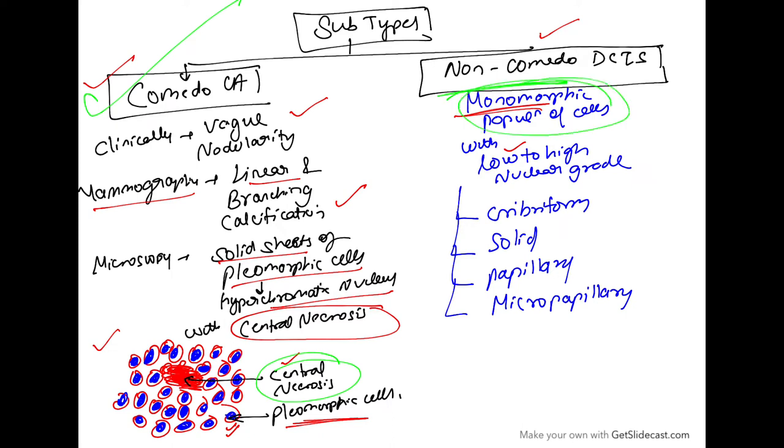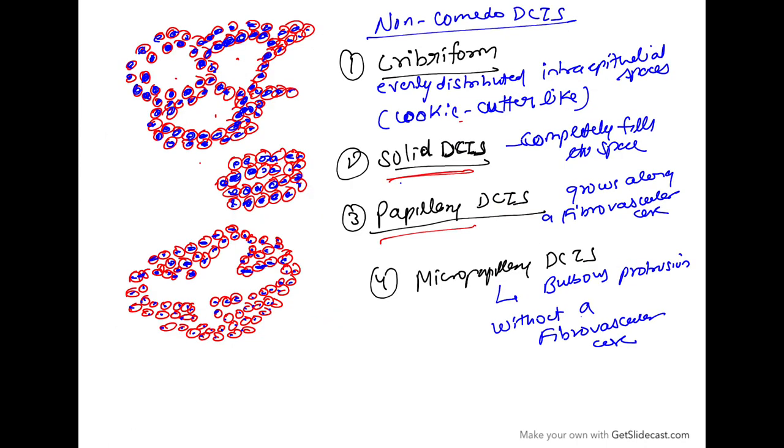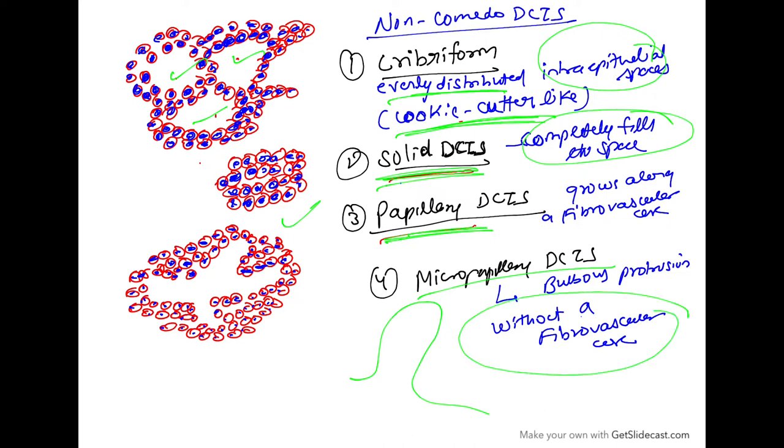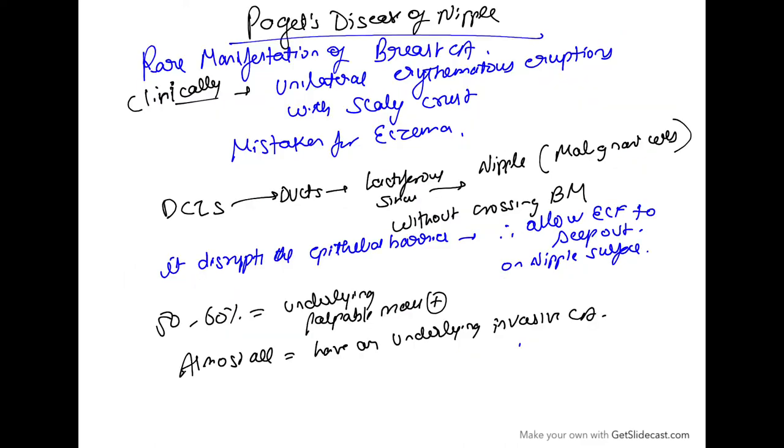Non-comedoid ductal carcinoma in situ has monomorphic populations of cells with nuclear grade from low to high. Subtypes are cribriform, solid, papillary, and micropapillary. Cribriform shows evenly distributed intraepithelial spaces, known as cookie cutter-like appearance. Solid DCIS has solid sheets of cells completely filling all spaces. Papillary DCIS grows along fibrovascular core. Micropapillary DCIS has bulbous protrusions without fibrovascular core.